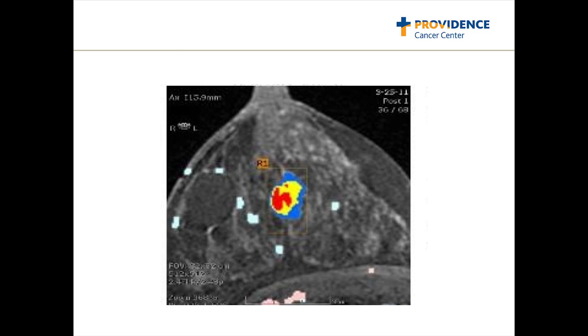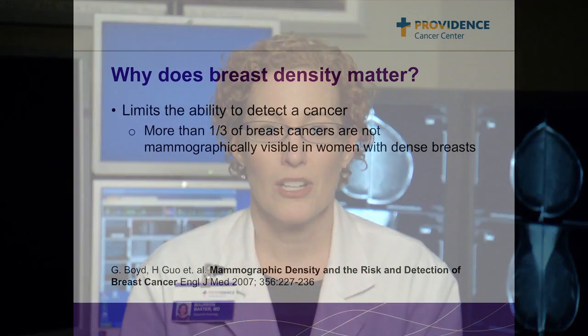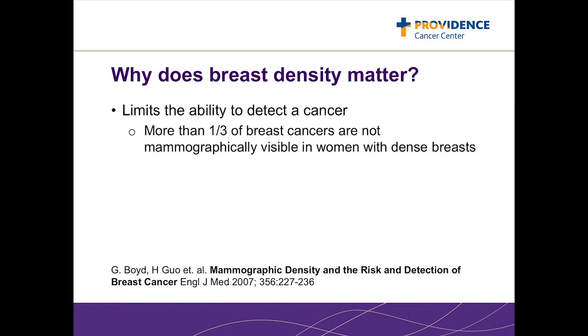Here is her MRI showing her 2.5 cm cancer in her right breast. There are two major issues with dense breast tissue. First, as we have just seen, the normal dense breast tissue can hide a cancer. More than one-third of breast cancers are not seen in women with dense breast tissue.